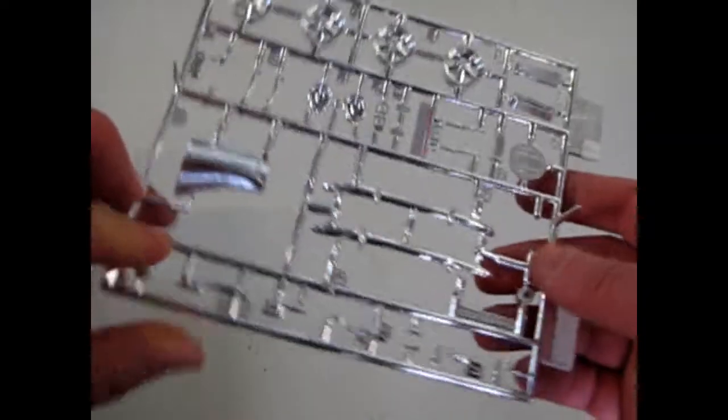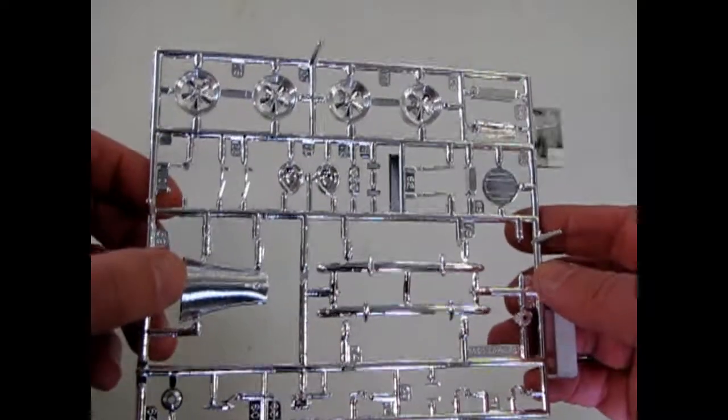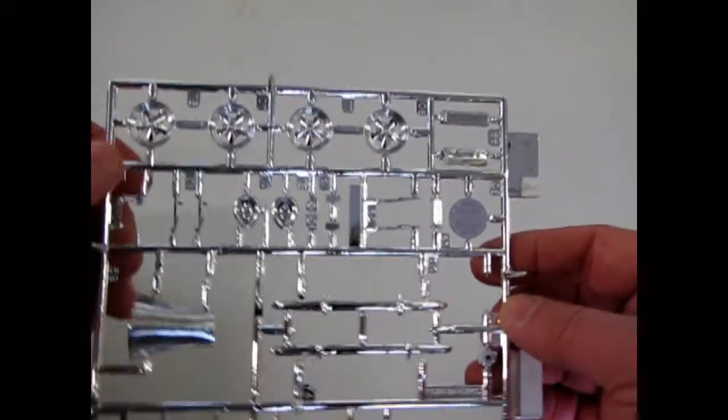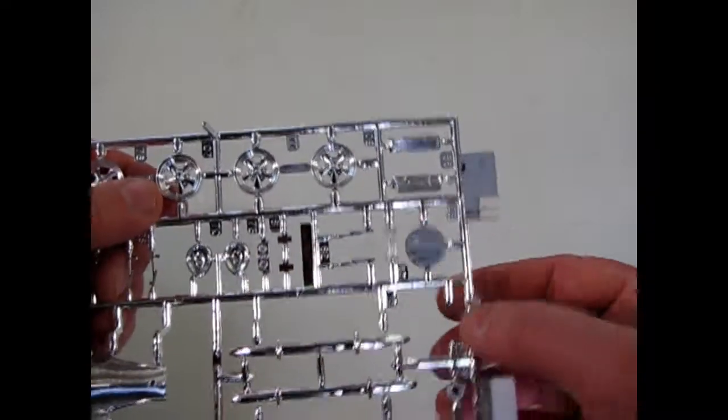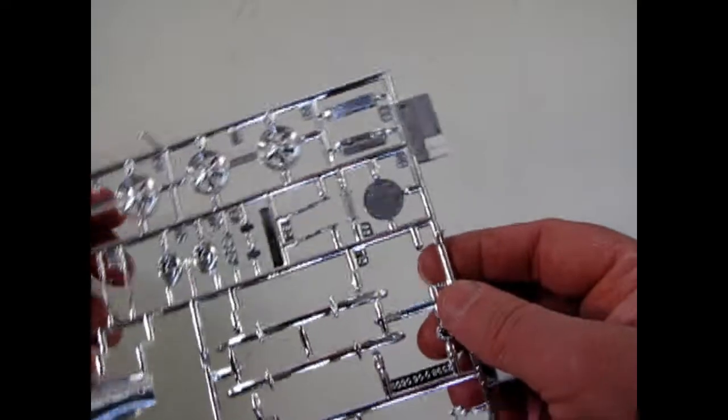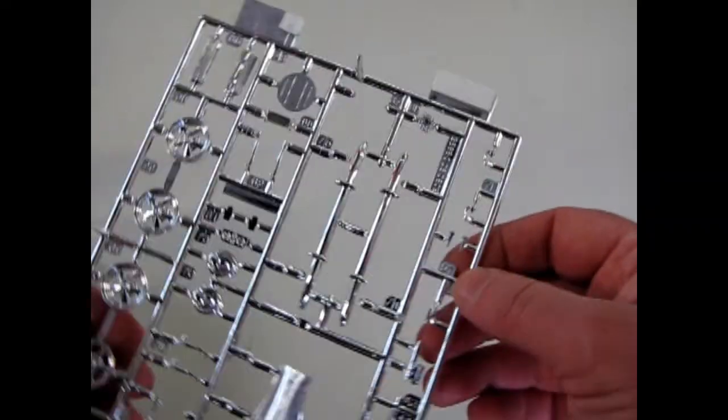Then we have our chrome pieces. Very nice 37 Ford distinctive grille. And our Cragar style mags. As well as that nice air cleaner with the stamped in bits.